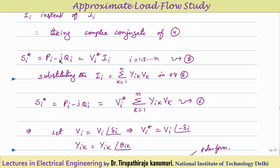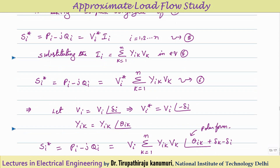So Si* = Pi - jQi = Vi* into Ii, because conjugate of (Vi * Ii*) gives Vi* * Ii. Substituting Ii = sigma k=1 to n of Yik*Vk into this equation (equation 6): Pi - jQi = Vi* times sigma k=1 to n of Yik*Vk.